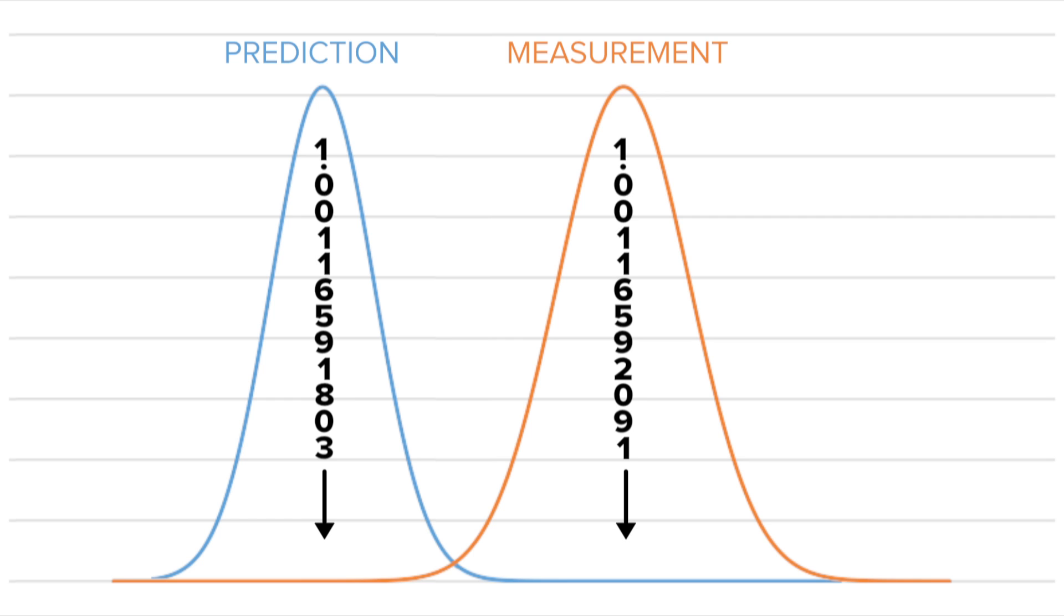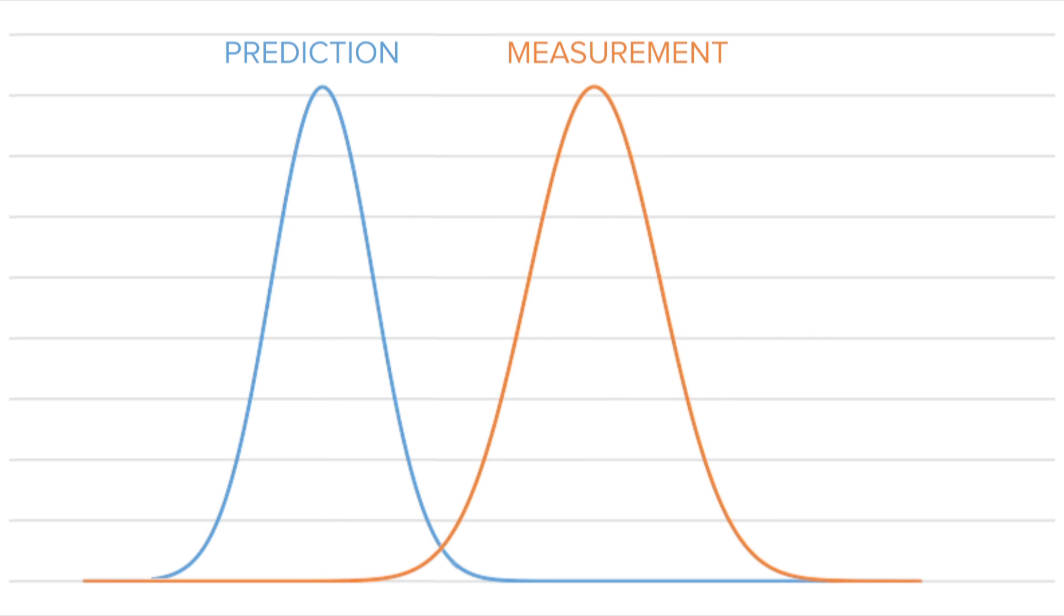The width of each curve indicates the uncertainty of each. If the prediction and measurement agreed, these two bell-shaped curves would lie on top of one another, like this. But they don't. They're offset, and the distance between them is bigger than seems possible, given each curve's uncertainty.